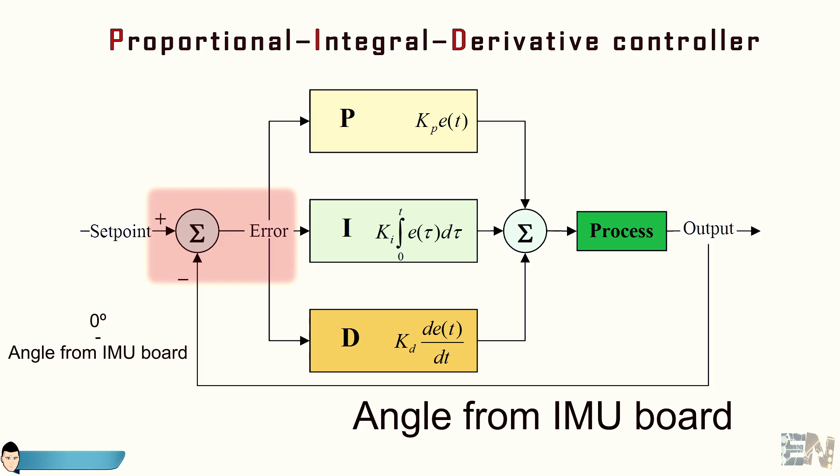So the first thing to do is to create a variable and name it error. We will give the difference value between the real angle and zero to this variable. Now we have our error value in each loop.